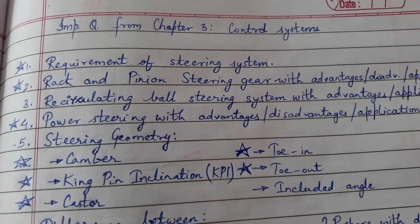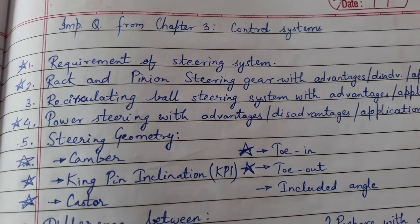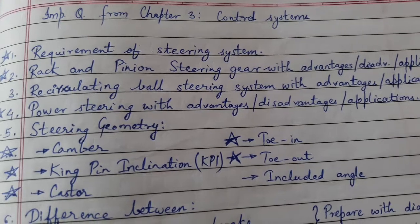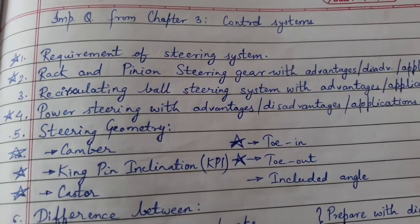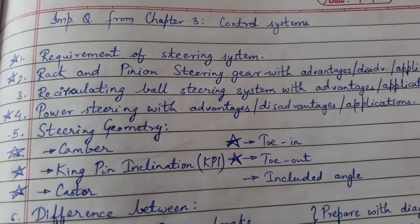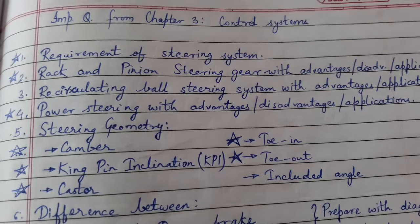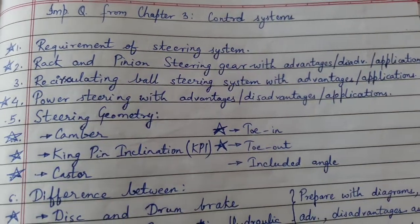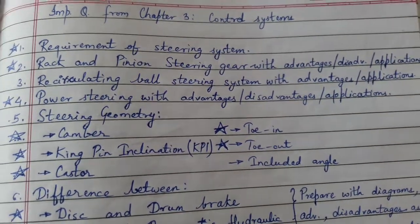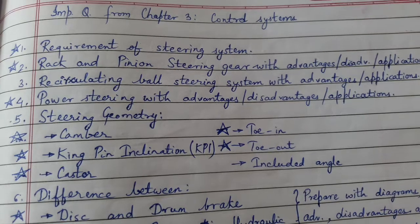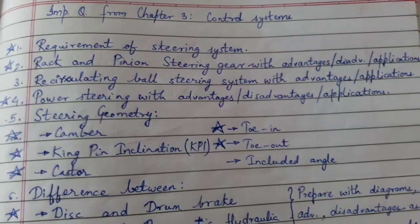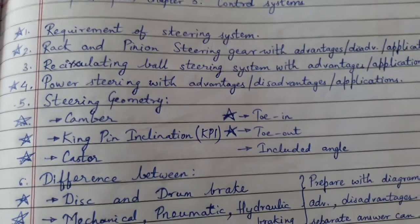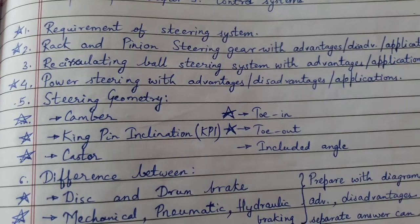Today's topic of discussion is an important question from Chapter 3: control system requirements of steering systems — rack and pinion steering gear with advantages, disadvantages, and applications; recirculating ball steering system with advantages and applications; and power steering with advantages, disadvantages, and applications.